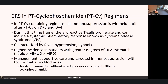One important complication in regimens containing cyclophosphamide is cytokine release syndrome. Since all immunosuppression is withheld until after PT-Cy is given on day plus four, those alloreactive T cells are proliferating, recognizing non-self, and can induce a systemic inflammatory response known as CRS. This is characterized by fever and can be associated with hypotension and hypoxia in more severe manifestations. There is a higher incidence in patients with greater degrees of HLA mismatch. PT-Cy is used for haploidentical donors, but also increasingly useful in mismatched unrelated, matched unrelated, or even matched-related donor scenarios. Management focuses on supportive care, but we can also give targeted immunosuppression with tocilizumab—an IL-6 blockade—which treats the T-cell-driven inflammation without altering donor cell susceptibility to cyclophosphamide.